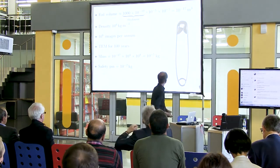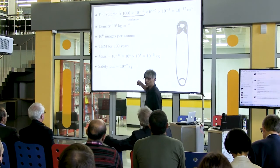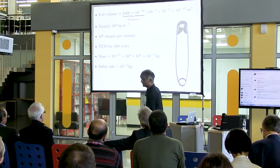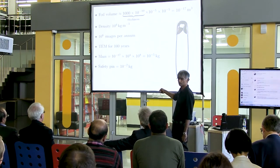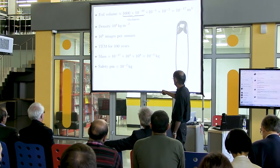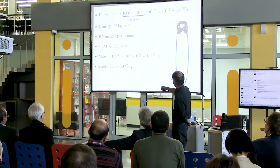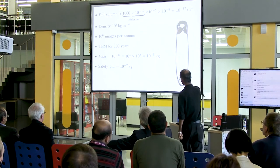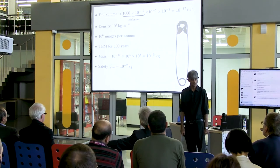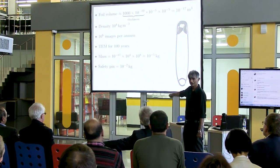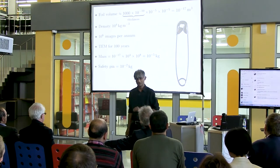Let's do a little calculation. We have a foil which is 100 nanometers thick, and it's 10 micrometers by 10 micrometers square — typically the thin area. The volume of that foil is 10 to the minus 17 meters cubed. Assuming a density of around 10,000, and let's say we take a million images every year, and that the transmission electron microscope has existed for a hundred years — the total amount of material ever examined in a transmission electron microscope is 10 to the minus 5 kilograms. So how can you claim that when you make an observation in a TEM, you can go and build a bridge?